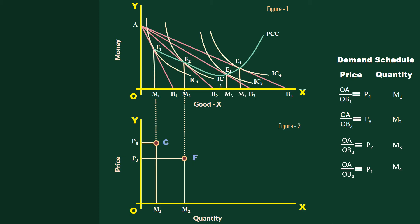Plot the points M3, P2 and M4, P1 in Figure 2. Points G and H respectively represent this.